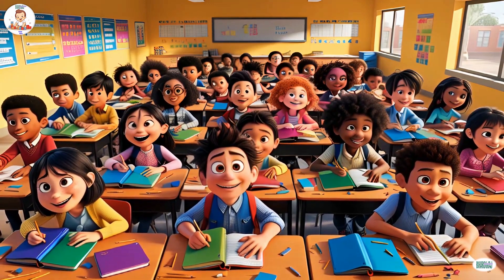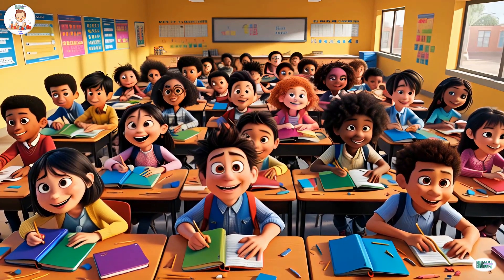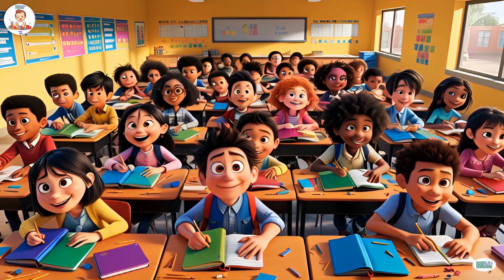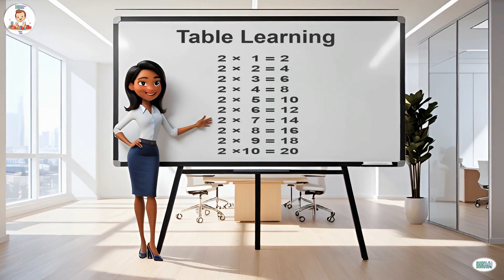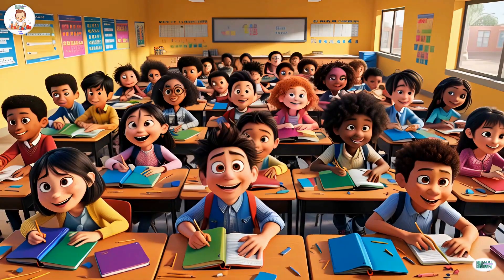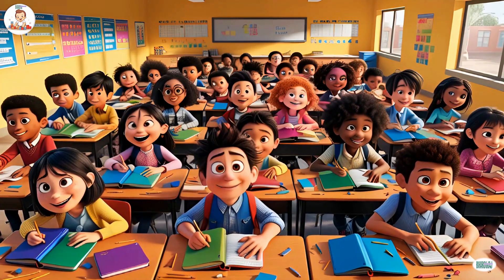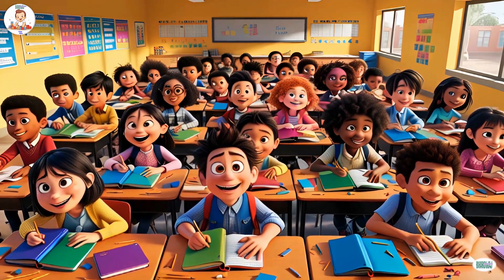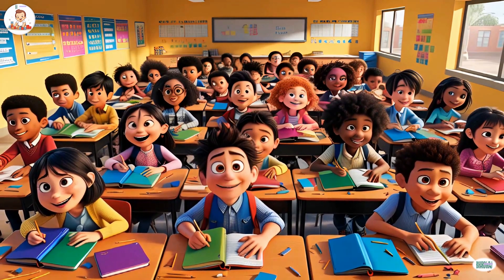Two threes are six, two fours are eight, two fives are ten, two sevens are fourteen, two eights are sixteen, two nines are eighteen, two tens are twenty.